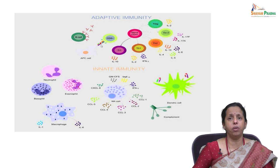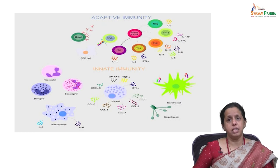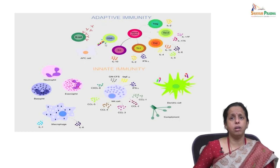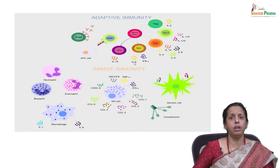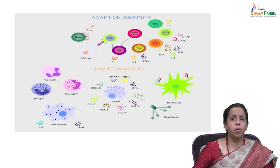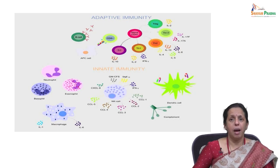T cells, specifically CD4 T cells, are further subdivided into TH1 and TH2, which secrete IL-2 and IL-5 respectively. B lymphocytes also have a role in adaptive immunity via recognition of foreign antigens through various B cell receptors, whereby a lot of antibody production happens.